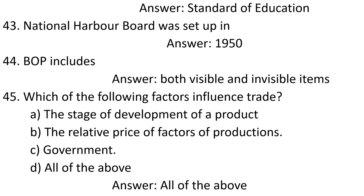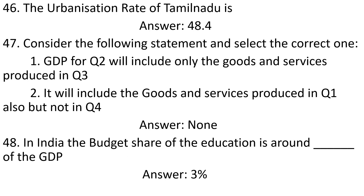Question 44: BOP includes. Answer: Both visible and invisible items. Question 45: Which of the following factors influence trade? A. The stage of development of a product. B. The relative price of factors of production. C. Government. D. All of the above. Answer: All of the above. Question 46: The urban literacy rate of Tamil Nadu is? Answer: 48.4. Question 47: Consider the following statements and select the correct one. 1. GDP for Q2 will include only the goods and services produced in Q3. 2. It will include the goods and services produced in Q2, Q1 also but not in Q4. Answer: None.